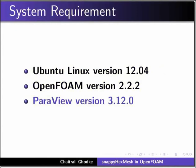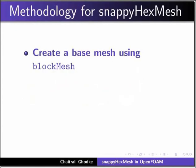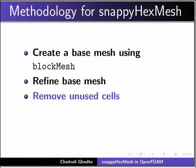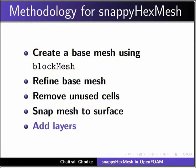Let us learn to create a mesh with the SnappyHexMesh utility. The steps are as follows: Step 1, create a base mesh using the BlockMesh utility. Step 2, refine the base mesh. Step 3, remove unused cells. Step 4, snap mesh to surface. Step 5, add layers. We will open the terminal and enter the path for flange as shown.